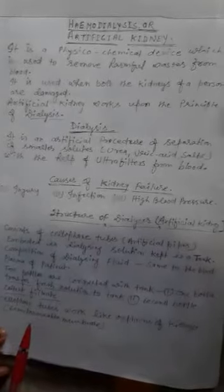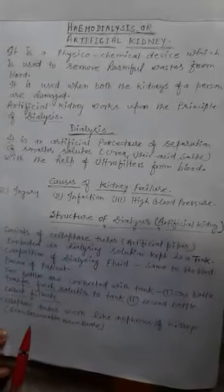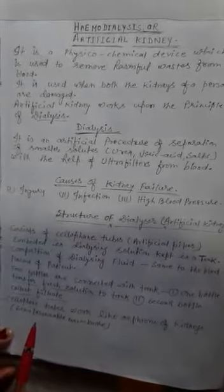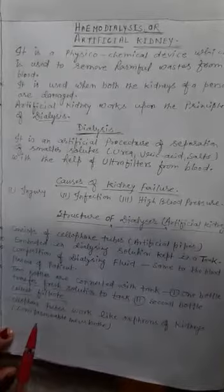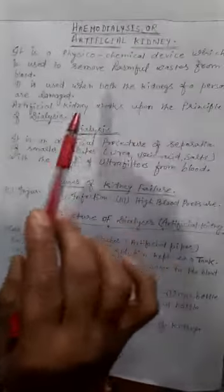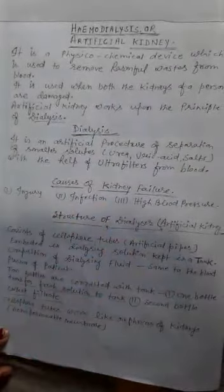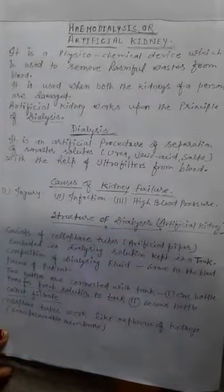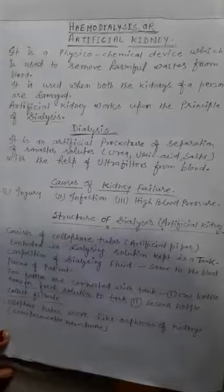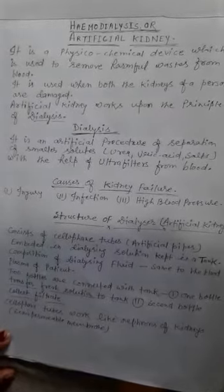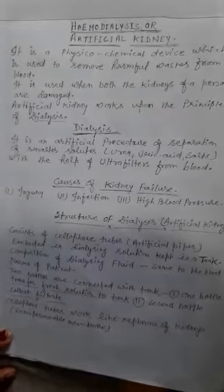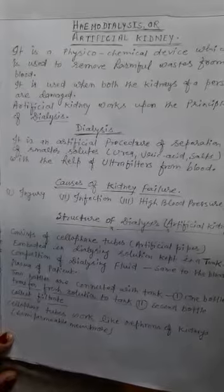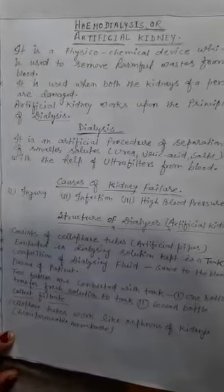This is a short video clip from the topic excretion, subtopic hemodialysis or artificial kidney. Artificial kidney is a physico-chemical device which is used to remove harmful wastes from blood. It is used when both the kidneys of a person are damaged.